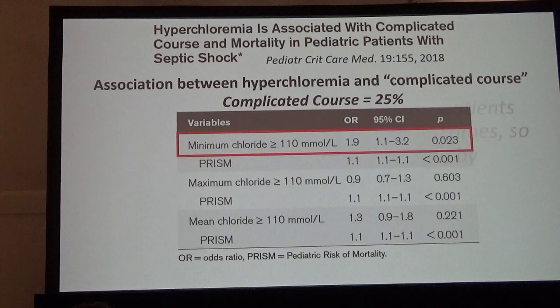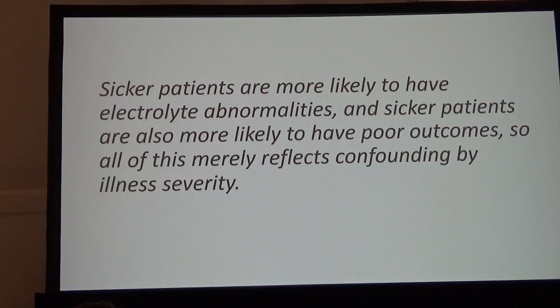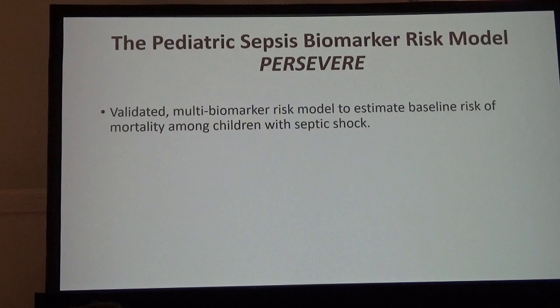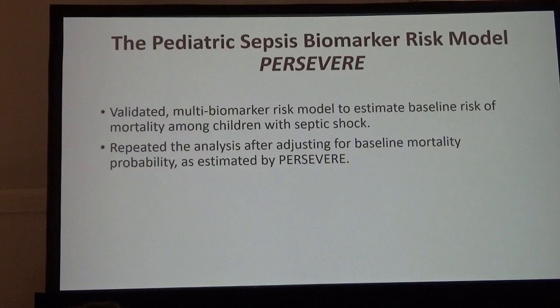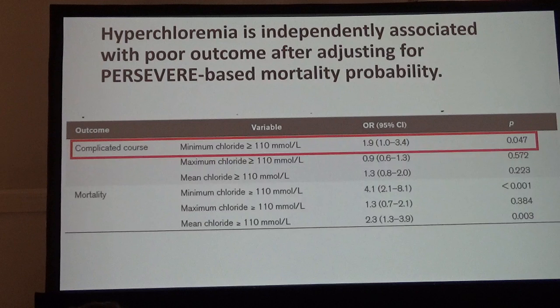Usually when I see this, I think sicker patients are more likely to have electrolyte abnormalities and more likely to have poor outcomes — so all these associations might just be confounding by illness severity, and there's probably an element of truth to that. But the evidence is becoming pretty compelling. We addressed this by using a biomarker score called Persevere — a multi-biomarker risk model to estimate mortality probability in kids with sepsis. We repeated the analysis adjusting for baseline mortality as measured by Persevere, and we saw the same thing: minimum and mean chloride remained associated with poor outcomes and complicated course.